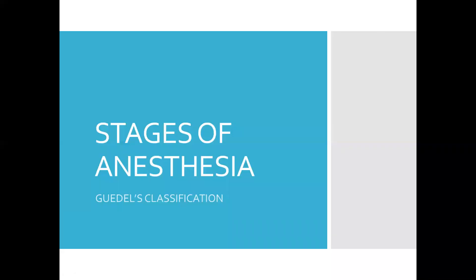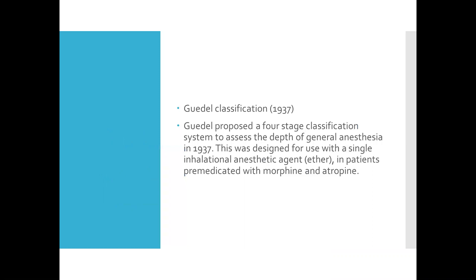Today we'll be talking about stages of anesthesia using Guedel's classification. Guedel proposed a four-stage classification system to assess the depth of general anesthesia in 1937. This was designed for use with a single inhalational anesthetic, ether — the first anesthetic they started using, in patients pre-medicated with morphine and atropine.